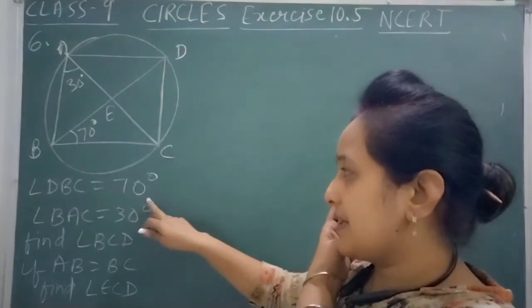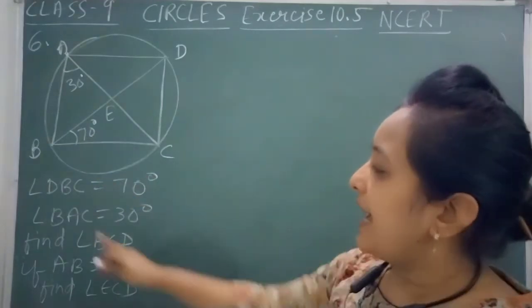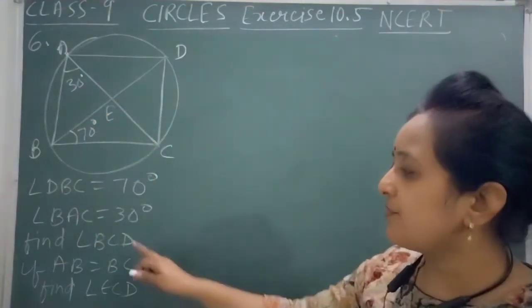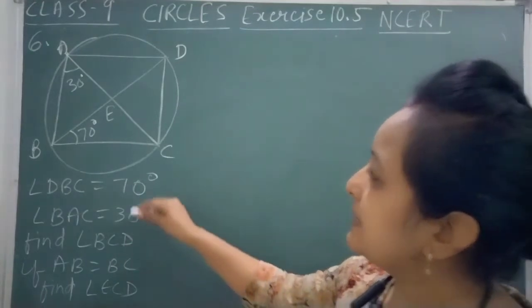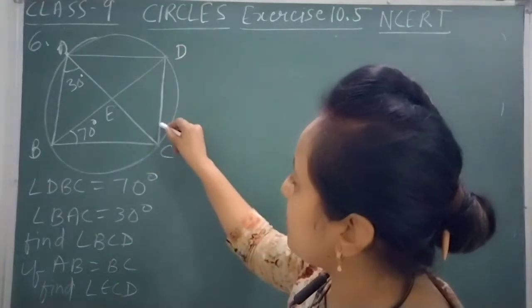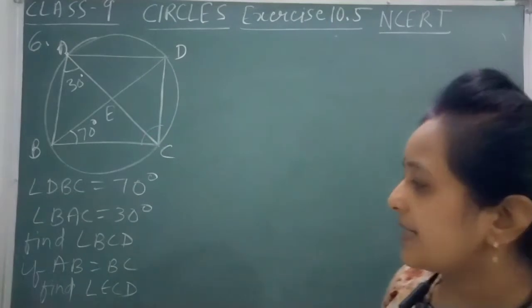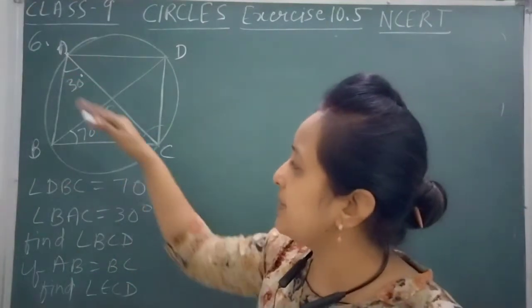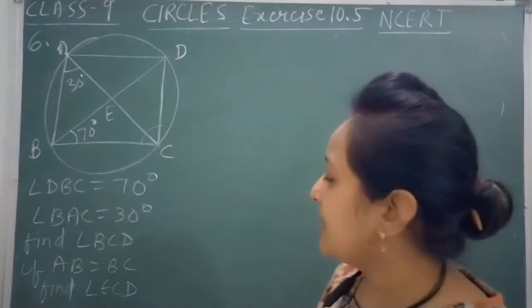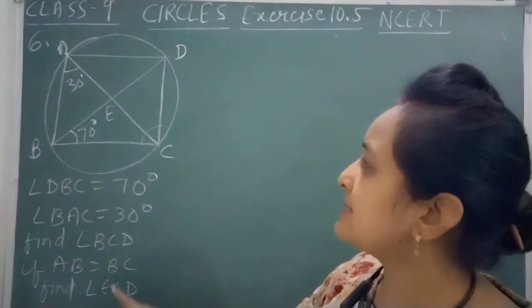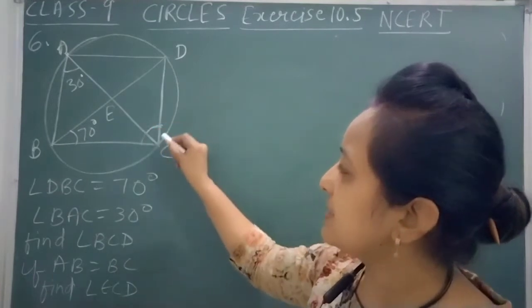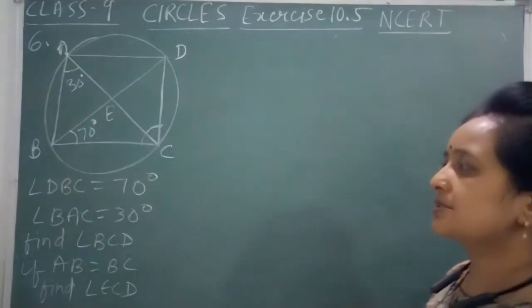Angle DBC is given 70 degrees. Angle BAC is given 30 degrees. We have to find angle BCD first. Second, if AB is equal to BC, then we have to find angle ECD. So two things to find: BCD and ECD.